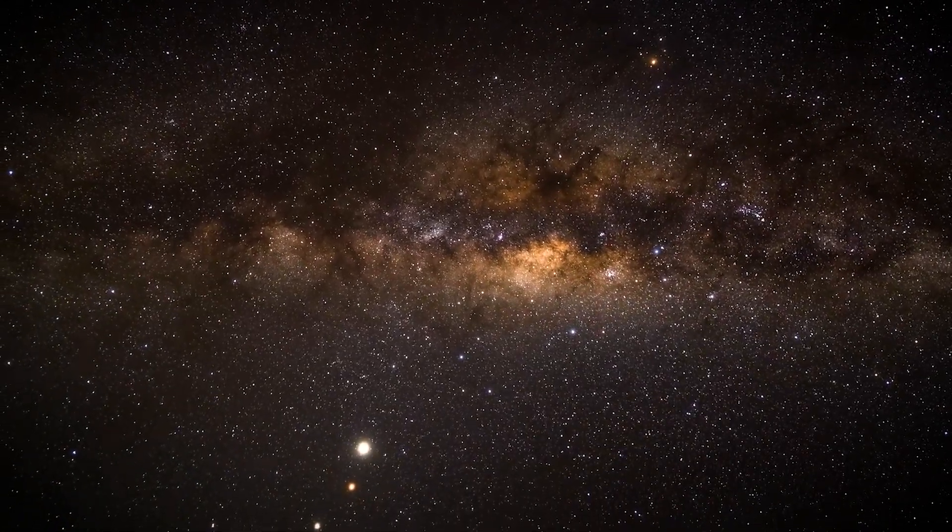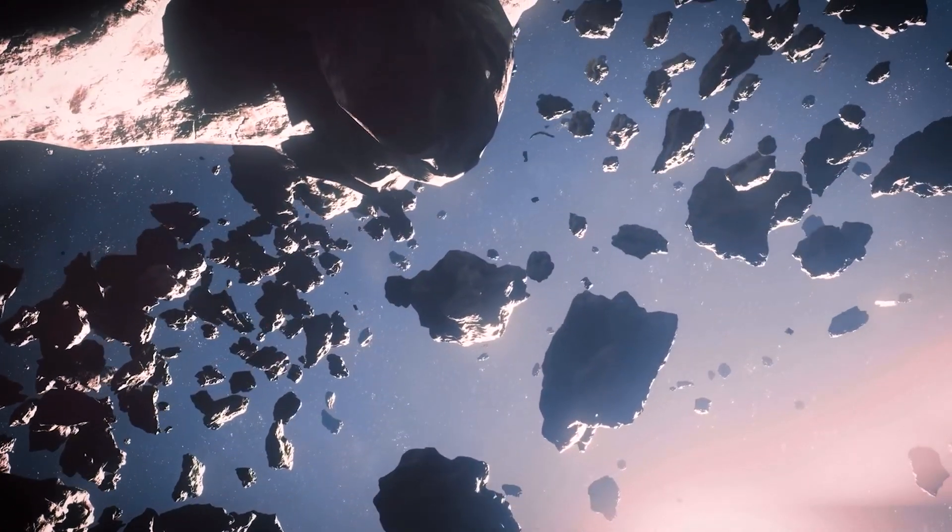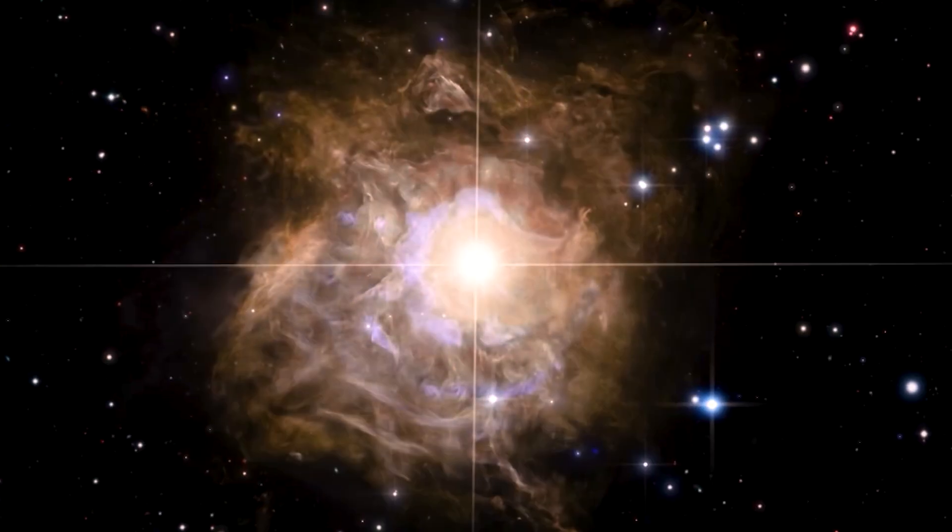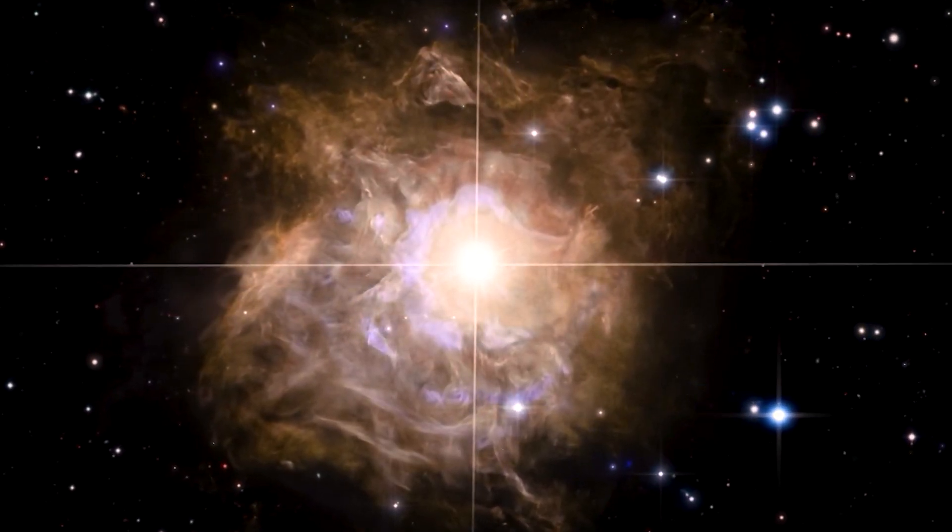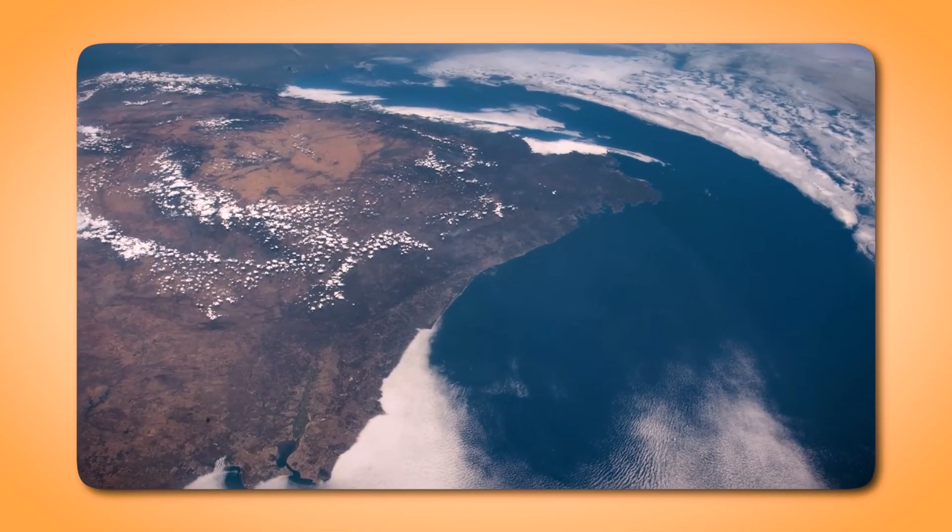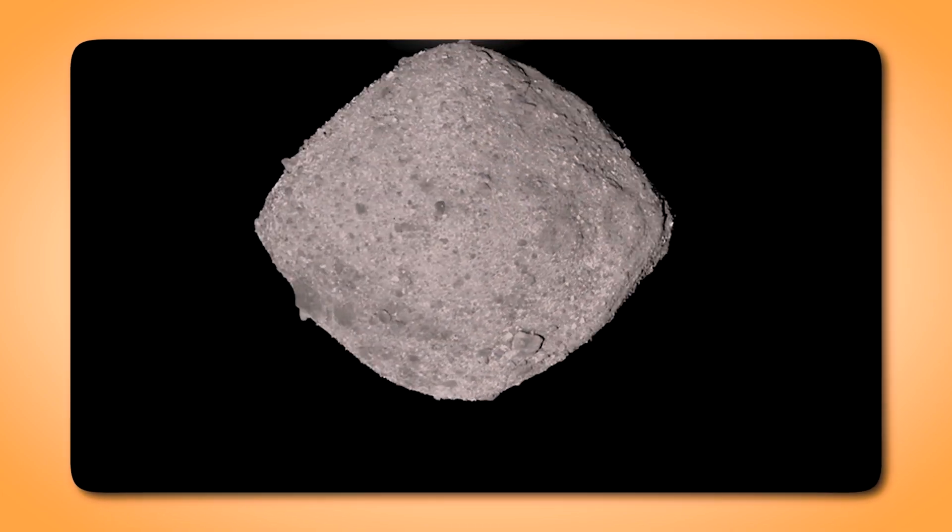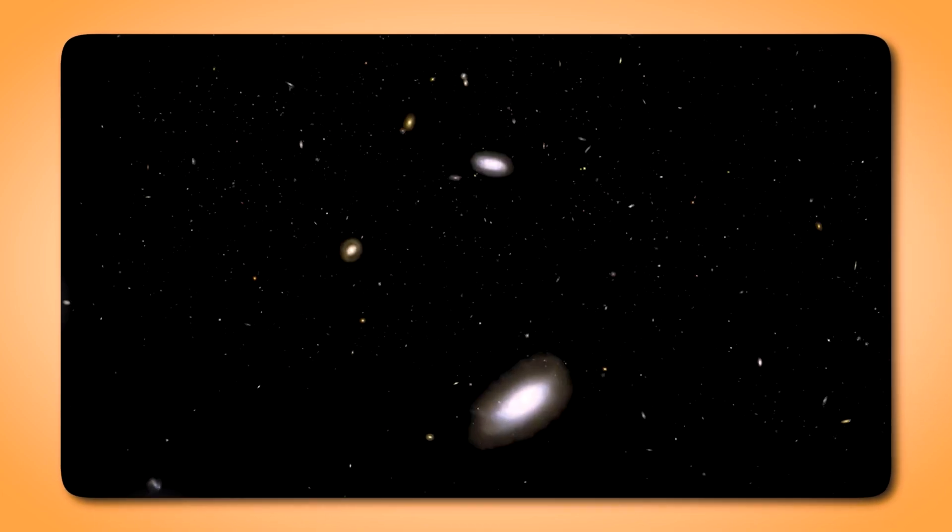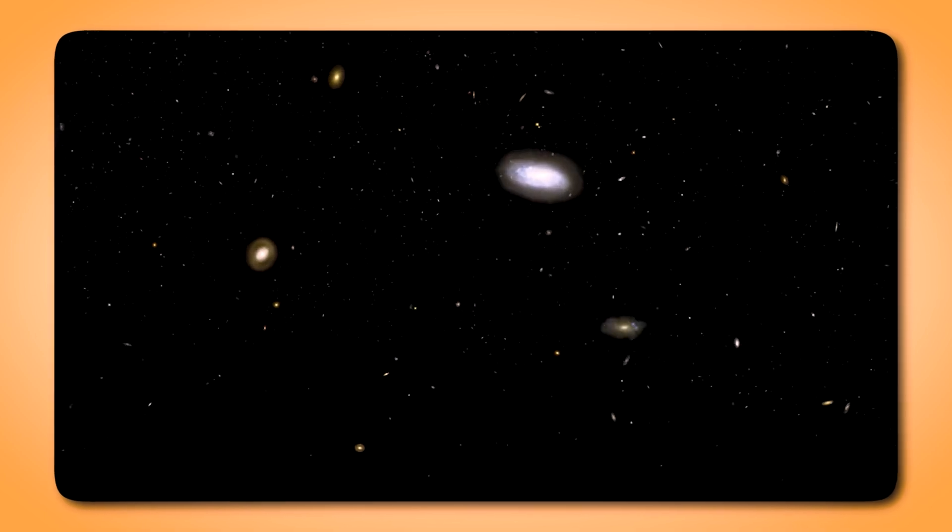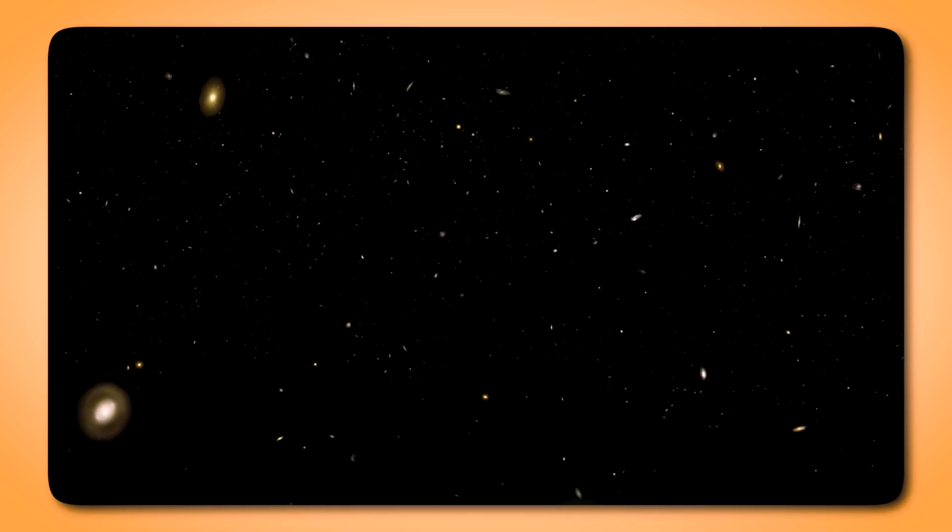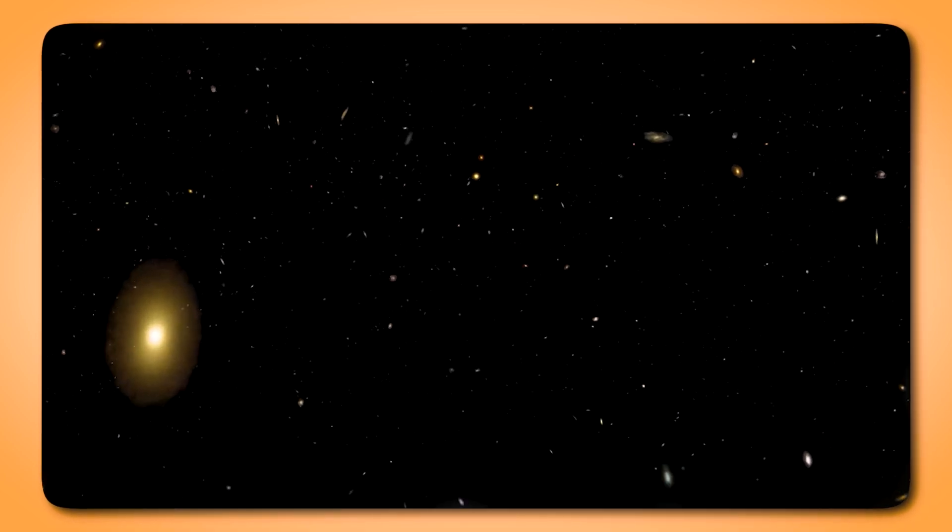More intriguingly, planetary scientists, such as Sarah Russell from London's Natural History Museum and an OSIRIS-REx team member, highlighted that the sample is dominated by hydrated minerals. This finding suggests Bennu was once part of a larger body that contained water. The sample's mineralogy revealed evidence of dynamic transformations caused by the presence of water, including the formation of clay minerals and salts left behind by evaporating water.